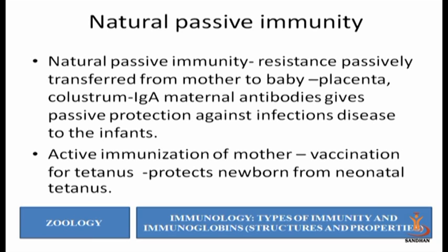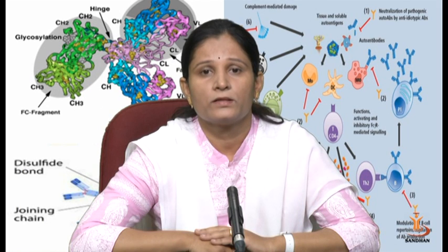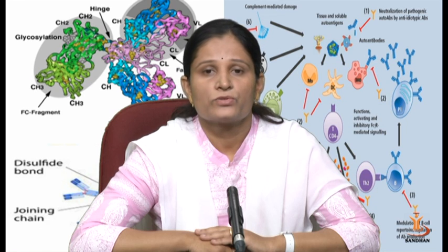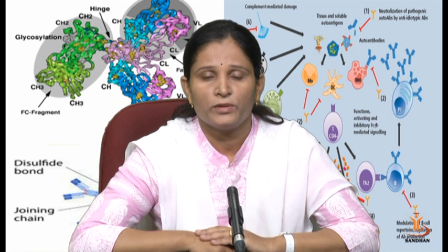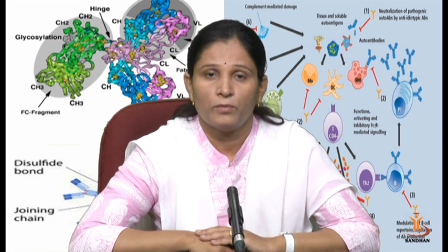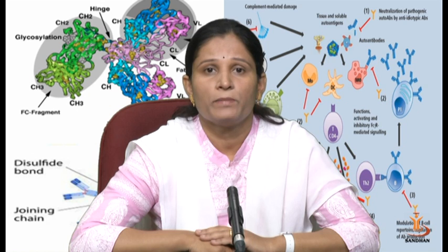Active immunization of the mother can also give passive immunity to the babies. For example, vaccination for tetanus can protect the newborn from neonatal tetanus. The babies receive ready-made antibodies from the mother either through milk or because the mother is vaccinated. By both ways, the baby's immune system does not synthesize any immunoglobulins; whatever immunoglobulins are synthesized by the mother are received and used by the baby to get protected from different microorganisms.